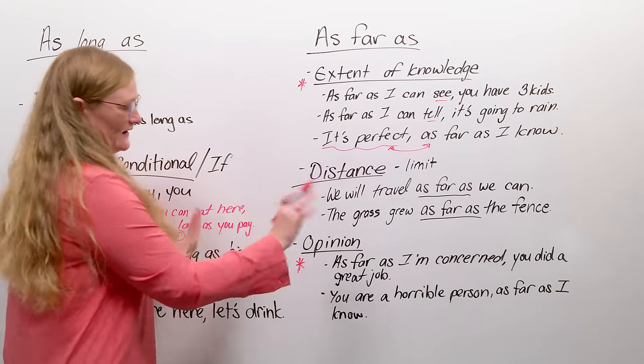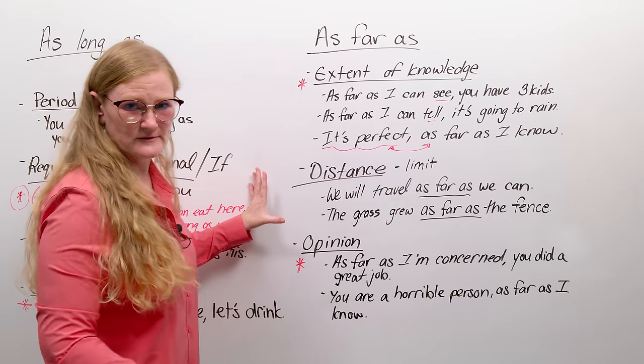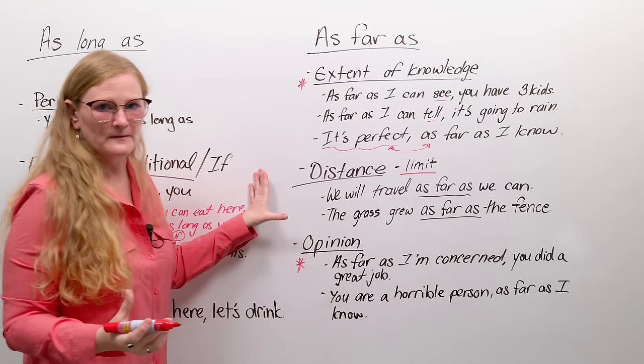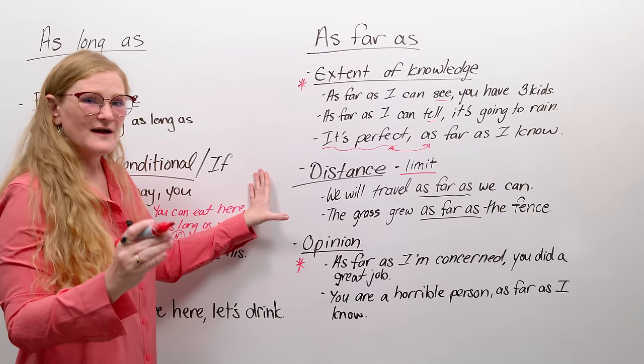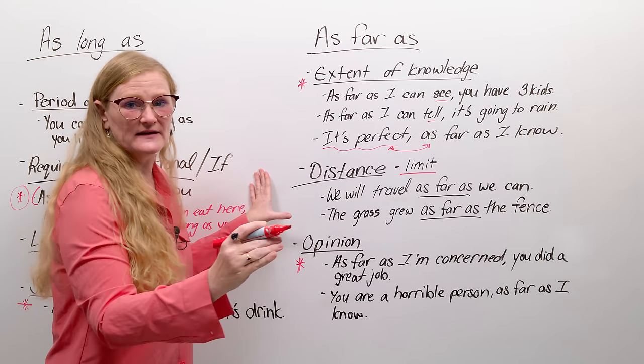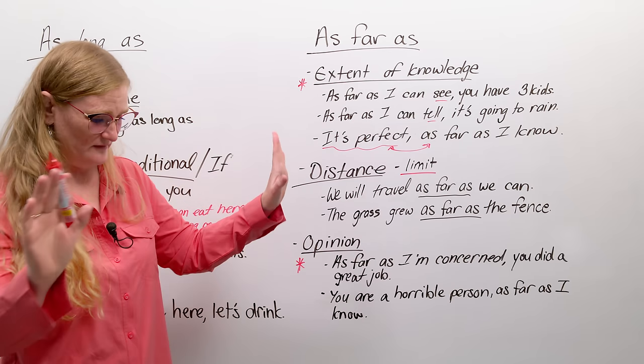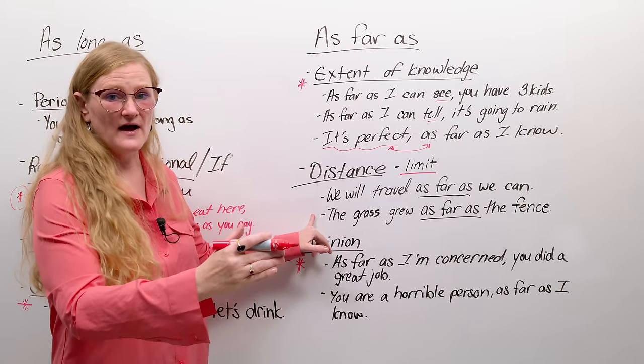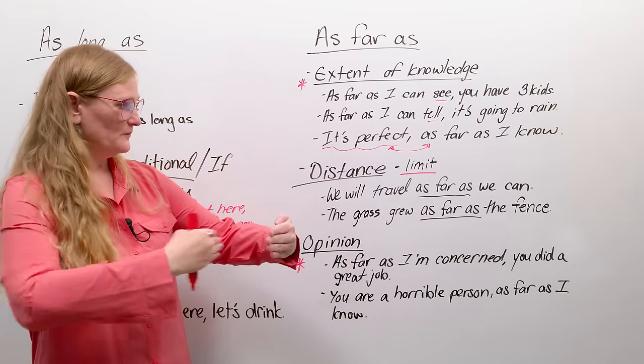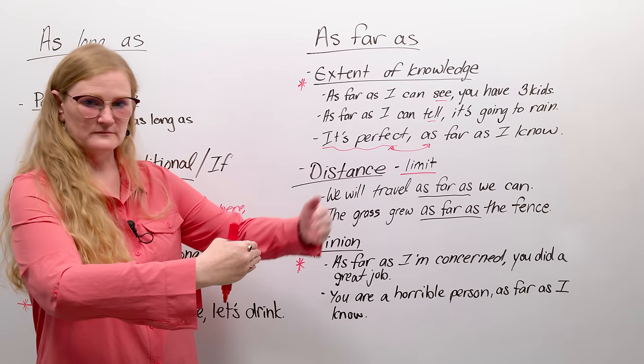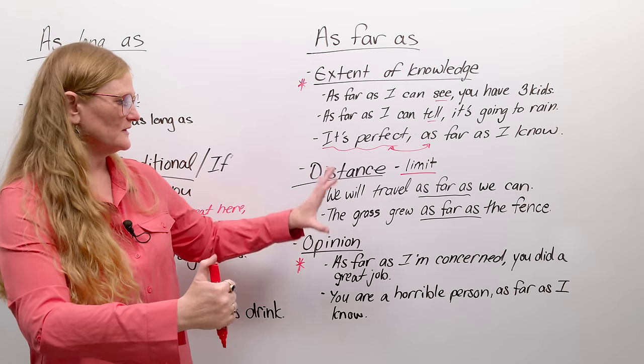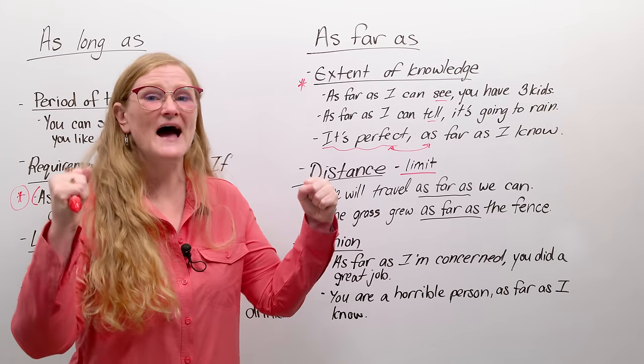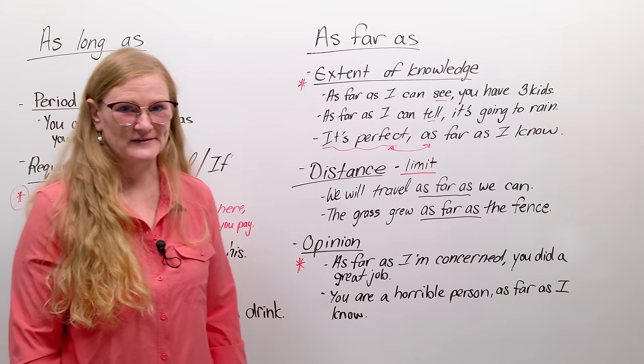Distance. Now, these ones we cannot switch. Okay? Do not change the order of this sentence, please. And this is telling us kind of our limitations on something. Our limits. We will travel as far as we can. But then we're just like, done, going to sleep now. The grass grew as far as the fence. So that means up to the limit of the fence, there was no more grass. So we're giving it a distance and a limit. I ran as far as the school. Yeah! And then I died. Because I'm not good at running.